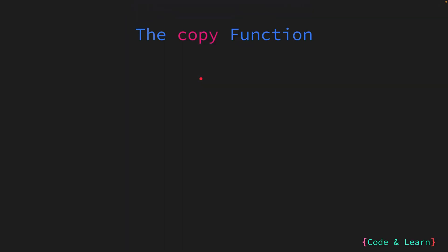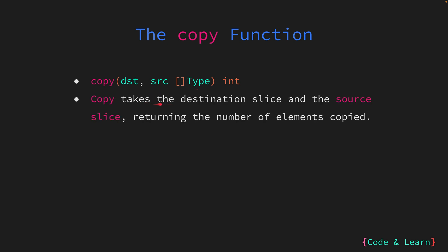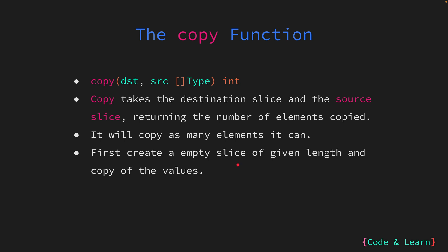Now you have seen the problems with slice expressions. Passing a capacity solves one problem — a new array is created on append — but direct manipulation still results in the ripple effect. The solution is the built-in copy function. The copy function takes a destination slice and a source slice, returning the number of elements copied. It is globally available like len, cap, and append. Copy will copy as many elements as it can from source to destination; if the destination is smaller it will omit the excessive values. Since the second argument is a slice, you can also pass a slice expression directly to copy from a slice or an array.